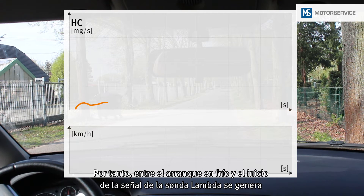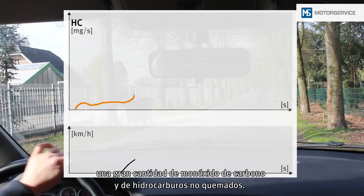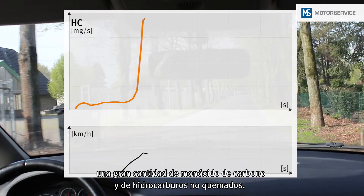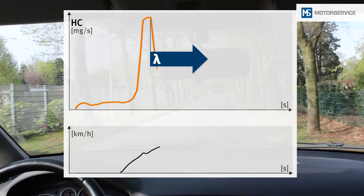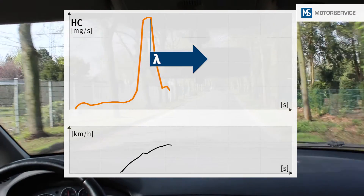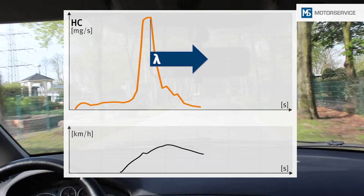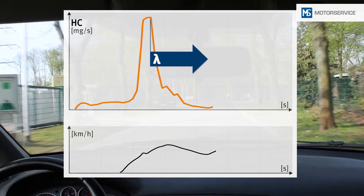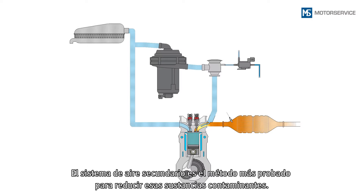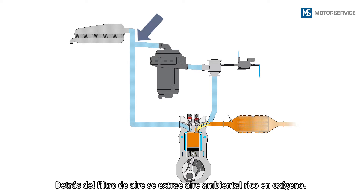This means that large quantities of carbon monoxide and unburned hydrocarbons are generated between a cold start and the start of the lambda control process. The secondary air system is a tried and tested method of reducing these pollutants. Oxygen-rich ambient air is extracted behind the air filter.